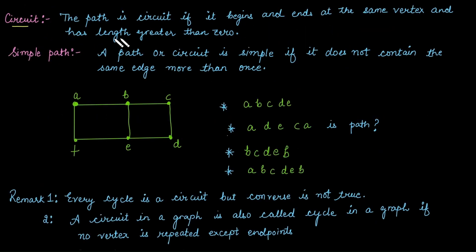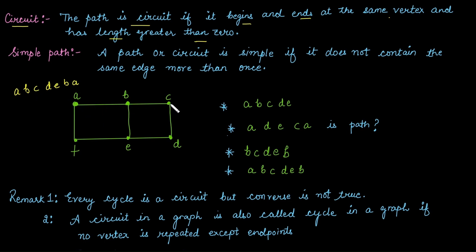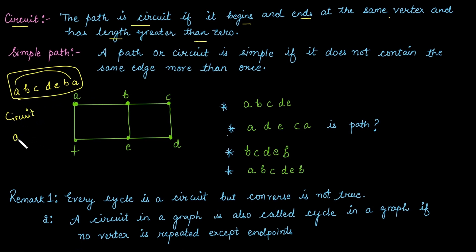The next term is a circuit. A path is a circuit if it begins and ends at the same vertex, and the length of that path is greater than zero. For example, the path a-b-c-d-e-b-a is a circuit because the endpoints are the same.